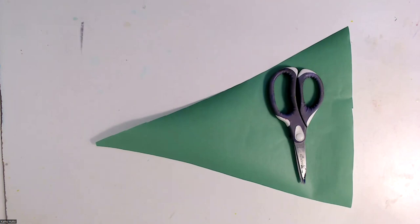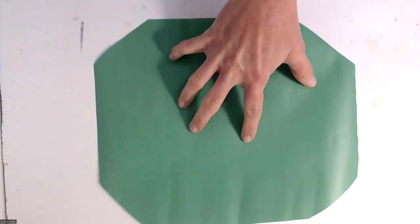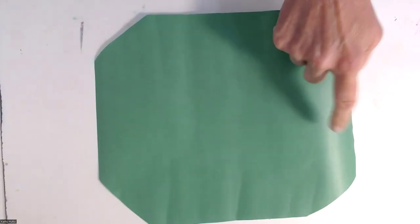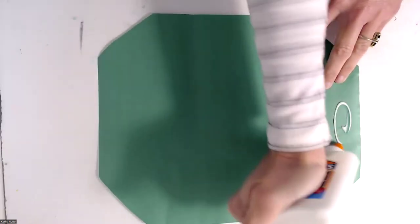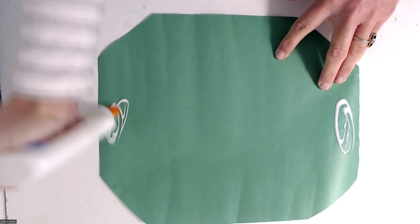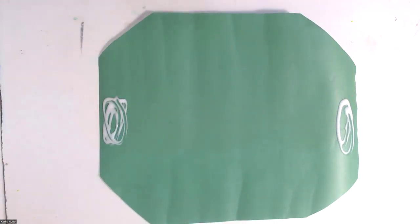Now we're going to put all this together. So let's start with the body. Grab that body, the one that we just cut all four corners off of. This is where we're going to start. We're going to put glue here and glue here. The head will go here, and the tail will go here.